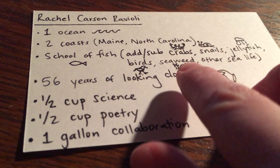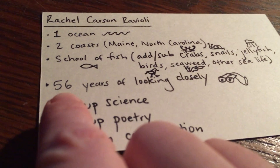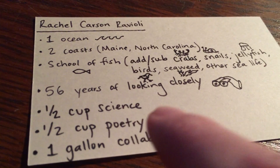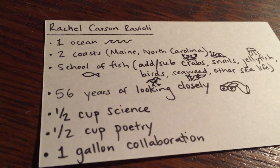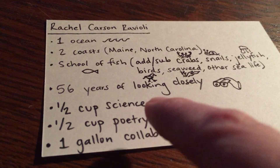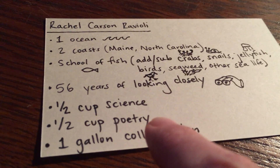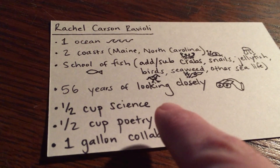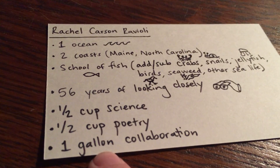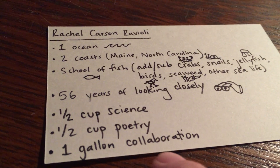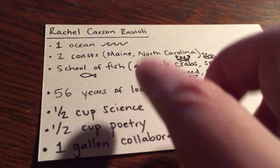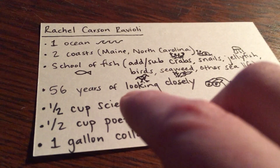And as usual, I added some doodles here because you can also read the pictures. Fifty-six years of looking closely — I have a pair of binoculars here. She spent her whole life observing, noticing, noting, and wondering about the world around her. A half a cup of science and a half a cup of poetry — Rachel Carson was a writer and she was really well known for writing about science in a really poetic way. That was unique to that time and it's been really inspiring for a lot of people since. So this half and half of science and poetry reflects her writing, and then one gallon of collaboration, because she didn't only look at the world around her — she also wanted to learn from other people who looked really closely at the world. So here is my list of ingredients: these are some of the important facts I wanted to share about my project.